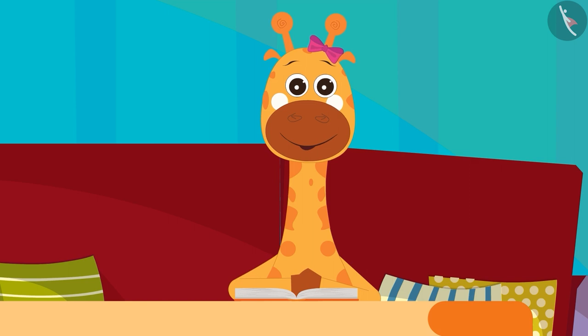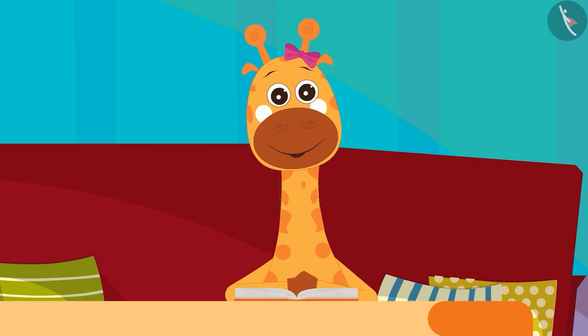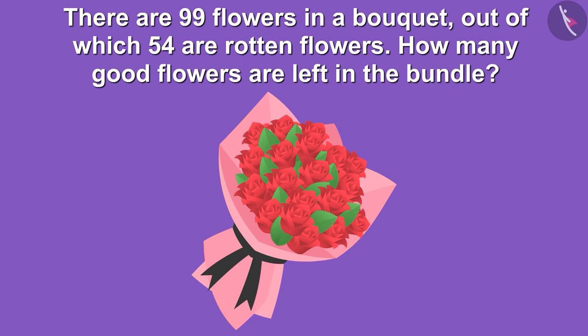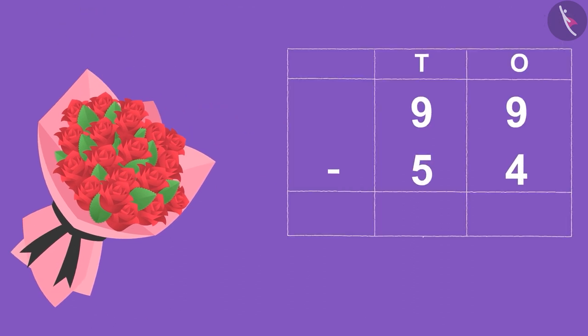Gaffey now has to solve this second question. Let us see what the second question is. There are 99 flowers in a bouquet, out of which 54 are rotten flowers. How many good flowers are left in the bundle? Friends, to find the answer, we write these numbers in the form of vertical subtraction.